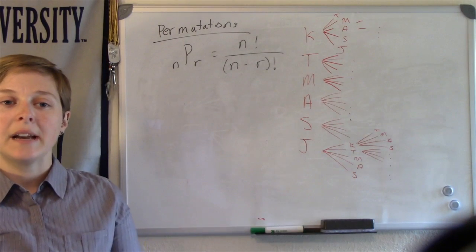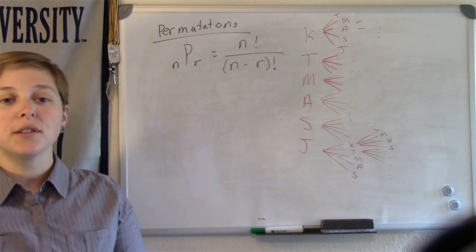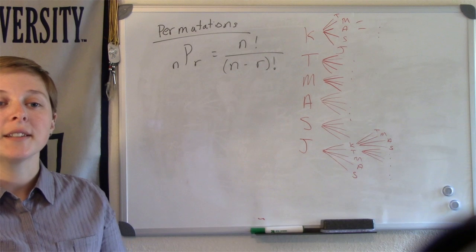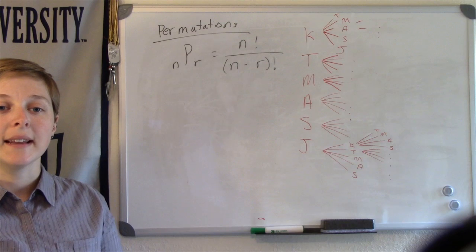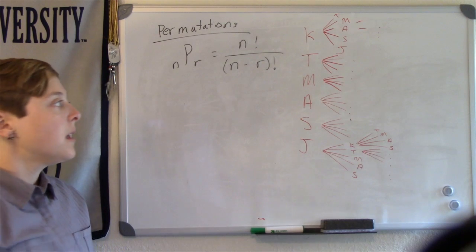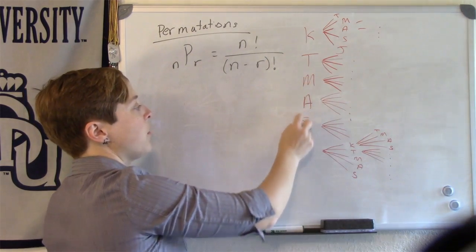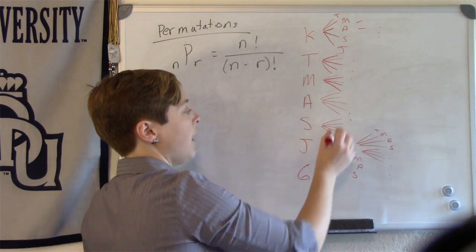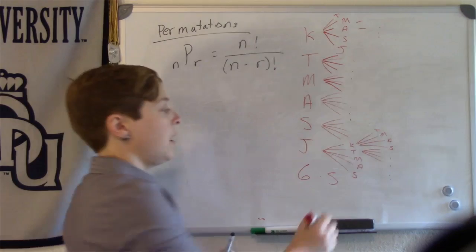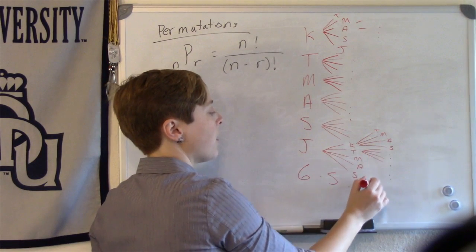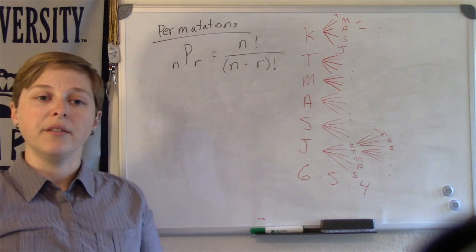This tree diagram is incomplete, but hopefully we can still get the idea. Here, the first column refers to the friend that was selected first in my favorites. The second column refers to the friend that was selected second in my favorites. Notice that I don't repeat a friend, so I have six options here. And then I only have five different branches that are possible for the second phone favorite. And then I only have four possible friends that are available for the third phone favorite.